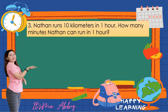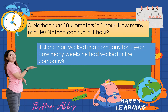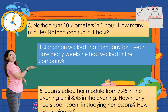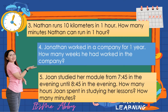Third: Nathan runs 10 kilometers in one hour — how many minutes can Nathan run in one hour? Do not forget the conversion table. Fourth: Jonathan worked in a company for one year — how many weeks did he work in the company?